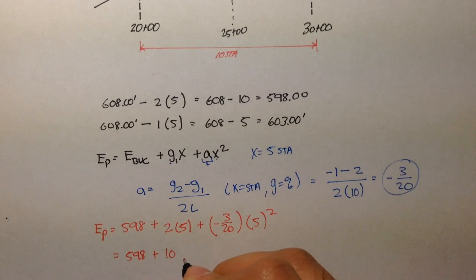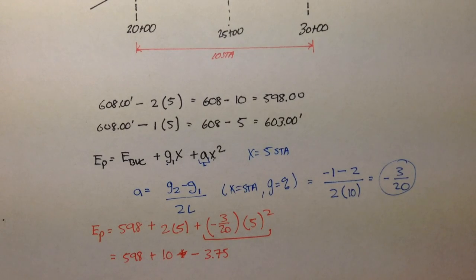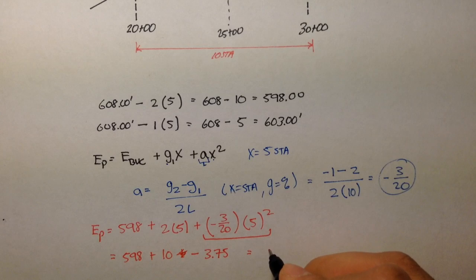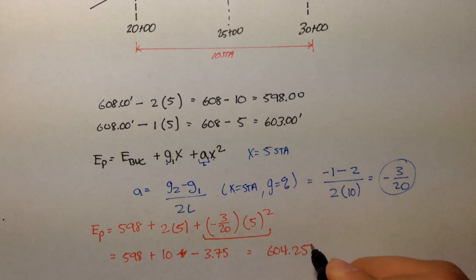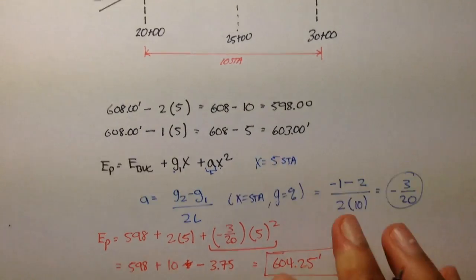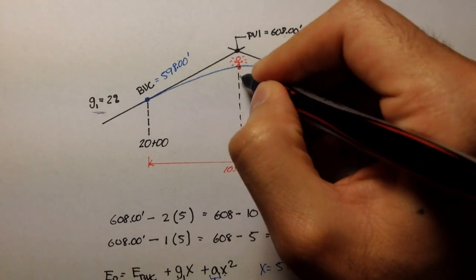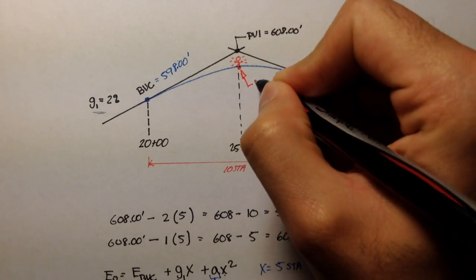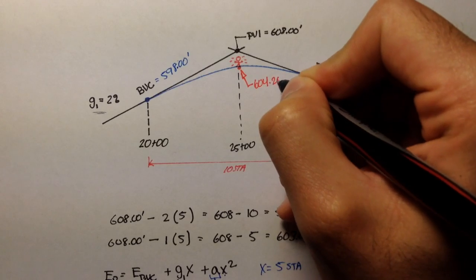The elevation of that point that we're interested in is EBVC, which was 598, plus grade 1, which was 2%, times the distance 5, plus our A term, which is negative 3 over 20, times 5 squared. If we do the algebra here, we'll have 598 plus 10 minus 3.75. EP is going to be at an elevation of 604.25 feet.